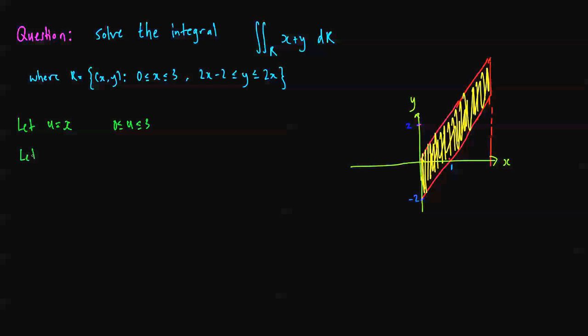But if we let v equal, 2x minus 2 is the constant of 2x over here, so if I can rewrite this as 2x minus y is less than or equal to 2, and this one as 2x minus y is greater than or equal to 0. Then if I let v equal to 2x minus y, then clearly v is going to be between 0 and less than or equal to 2.